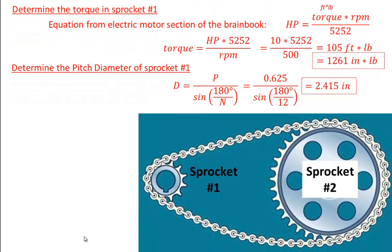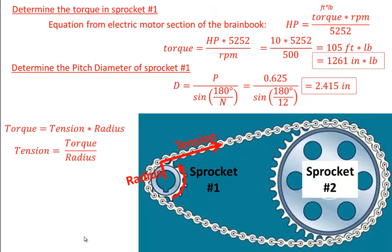To understand how tension is developed in the chain, realize that the motor is turning sprocket 1 and sprocket 2 is connected to a machine that doesn't want to turn. That results in a tug of war between sprocket 1 being forced to turn and sprocket 2 resisting, which causes tension in the chain. Sprocket 1 will turn if we have a big enough motor, but we can think of it as static equilibrium when determining maximum tension. The torque developed by the motor will be balanced by a force multiplied by the radius of the small sprocket. Using this torque balance equation, with a max torque of 1261 inch-pounds and a radius of 1.2075 inches (half of 2.415), the maximum chain tension is just over 1,044 pounds.